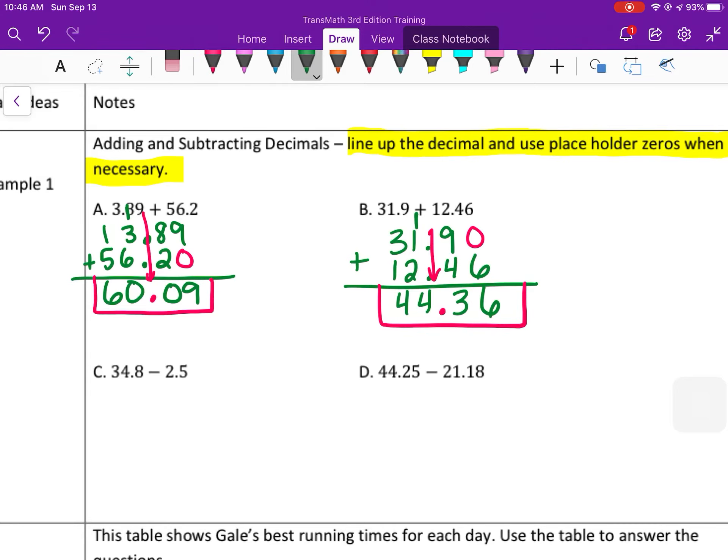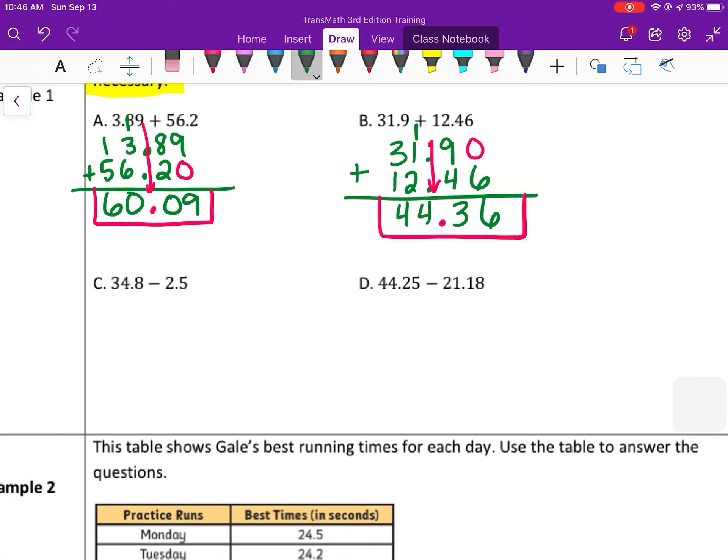Subtracting works the same way, but you might have to borrow. So first line up the decimals. 34.8 and then 2.5. So we make sure that the decimal points line up. And then you subtract from left to right. So this one I don't have to borrow. So 8 take away 5 is 3. 4 take away 2 is 2. I can put a placeholder of 0 there. So 3 take away 0 is 3. Bring the decimal points straight down. 32.3.